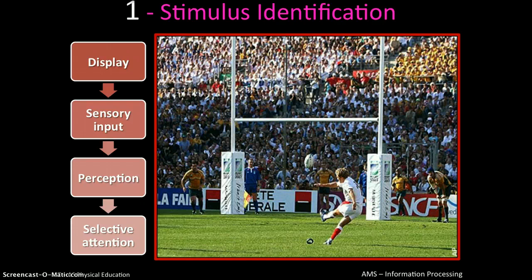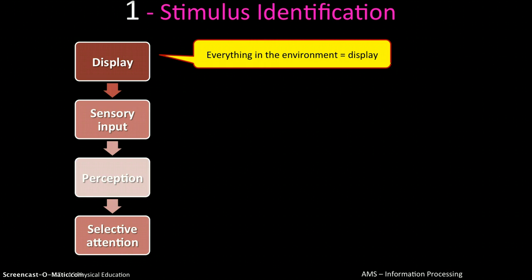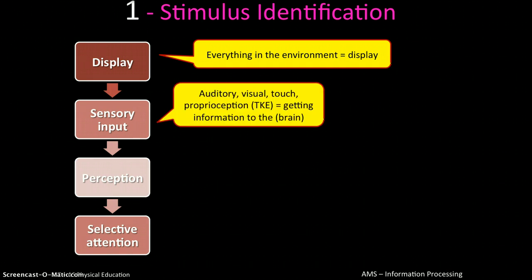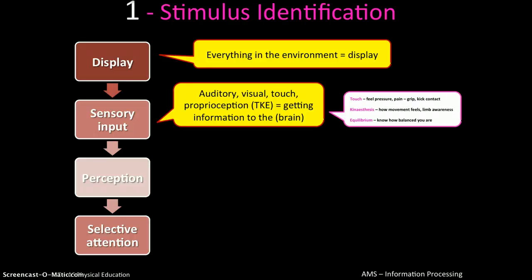Translating the key terms: display is everything in your environment. Sensory input involves all your senses — not just the familiar ones like auditory, visual, and touch, but also proprioception, which involves three further elements: touch of something, kinaesthetic awareness (how you sense movement), and equilibrium (how balanced you feel). These are referred to as TKE — touch, kinaesthesis, equilibrium.